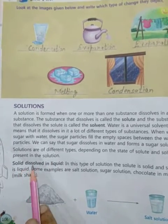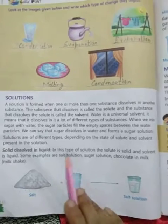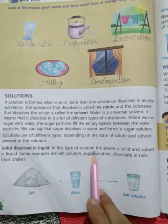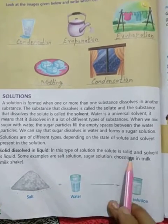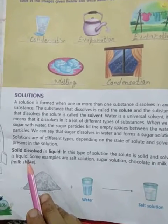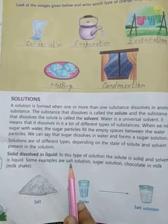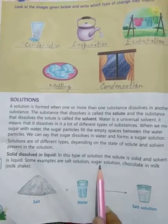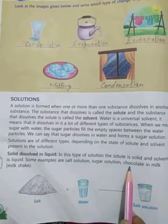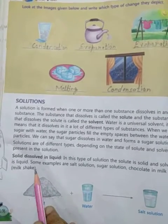Solid dissolves in liquid: in this type of solution, the solute is solid and the solvent is liquid. Some examples are salt solution, sugar solution, chocolate in milk, and milkshake.